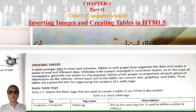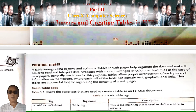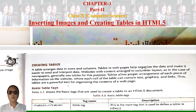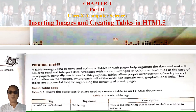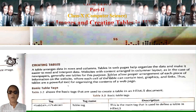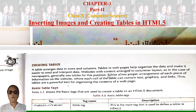Now we go to the next page and start creating tables. Tables arrange data in rows and columns. Tables in web pages help organize data and make it easier to read and interpret. Websites with content arranged in a columnar layout - as in the case of a newspaper - generally use tables. Tables allow proper arrangement of each piece of information on the website, where each cell can contain text, tags, graphics, and links. Thus tables are powerful tools for organizing web page content.